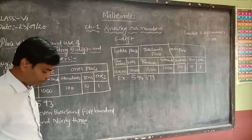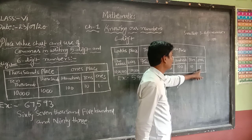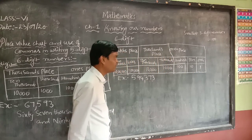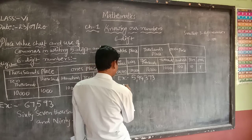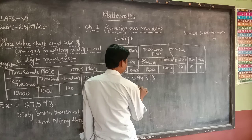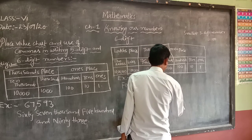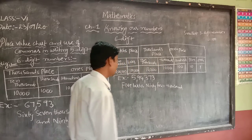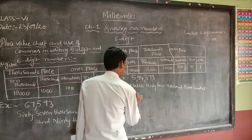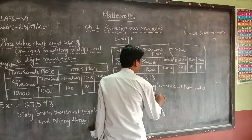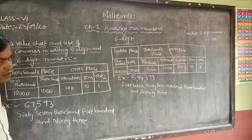For example, take 5,94,373. Now use the commas. We go from right to left: ones, tens, hundreds — one comma — then thousands and ten-thousands — one comma — that's all. So we read it as: five lakhs, ninety-four thousand, three hundred and seventy-three.